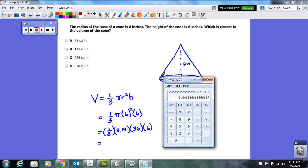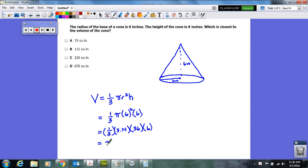And then we multiply that by 36, and then we multiply that by six. That gives us an answer of 226.08.